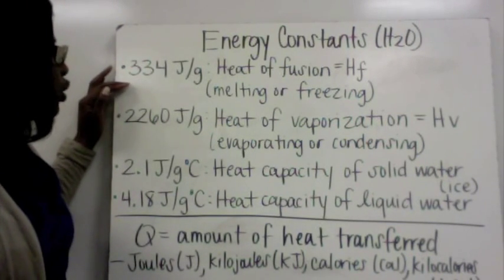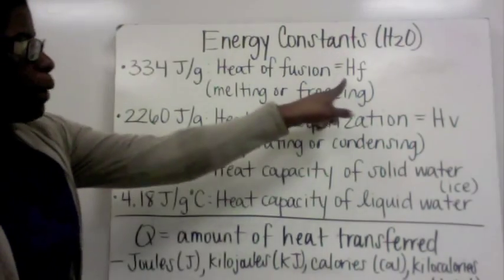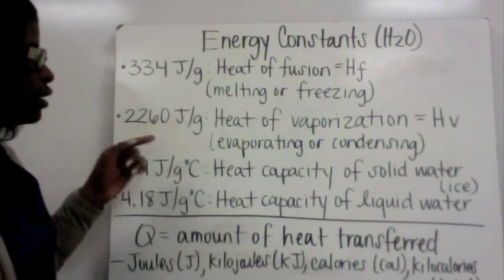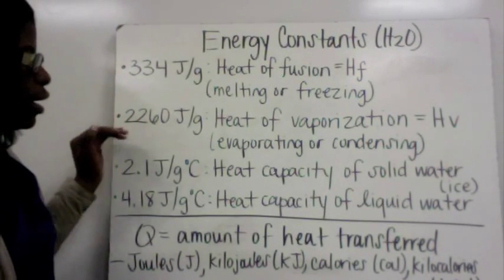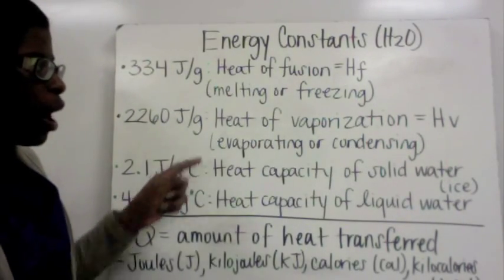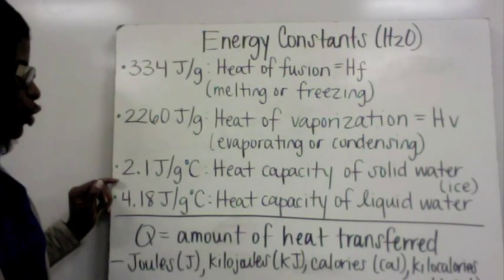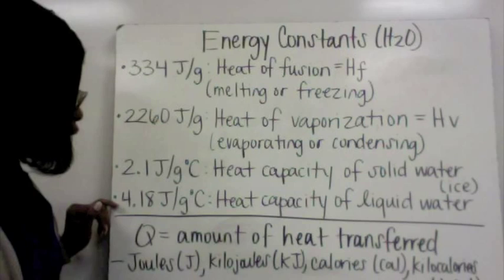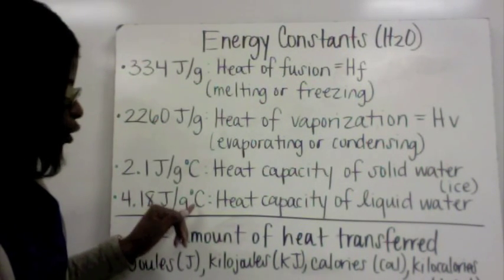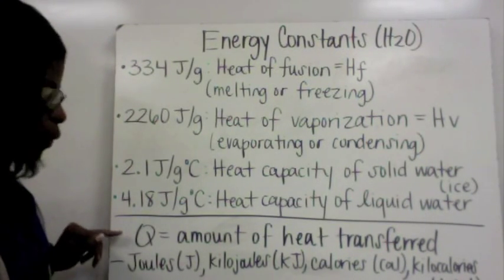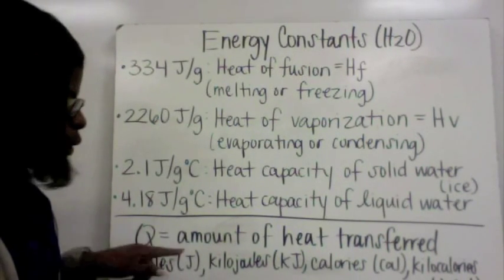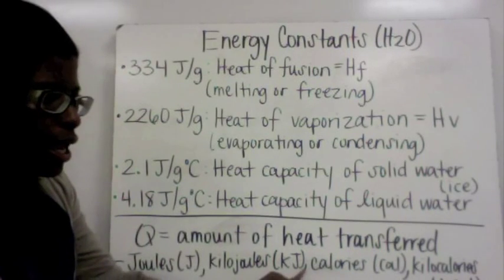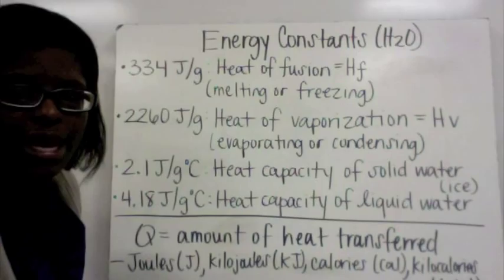For energy constants based upon water: 334 joules per gram is the heat of fusion, represented by Hf — this means water is melting or freezing. 2,260 joules per gram is the heat of vaporization, represented by Hv — this means water is evaporating or condensing. 2.1 J/g·°C is the heat capacity of solid water (ice), and 4.18 J/g·°C is the heat capacity for liquid water. Energy is represented by the variable Q — the amount of heat transferred — measured in joules (J), kilojoules (kJ), calories (Cal), or kilocalories (Kcal).